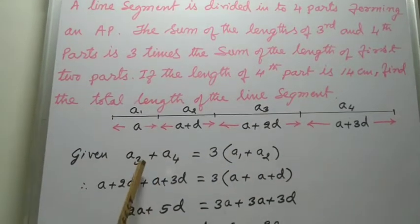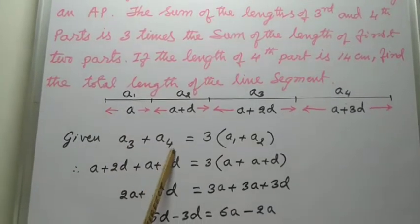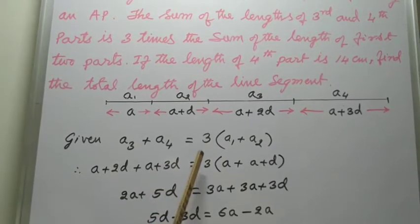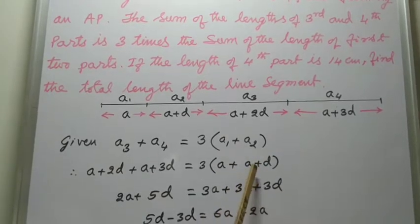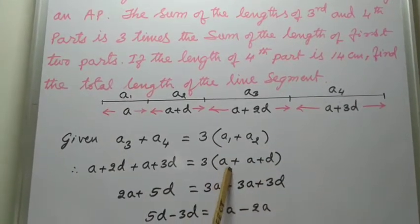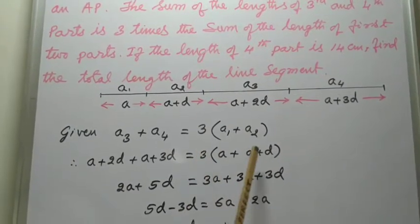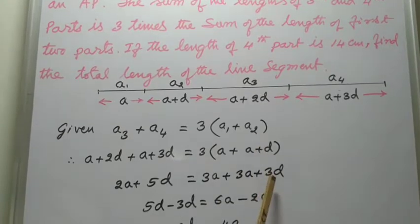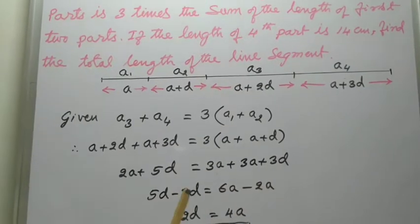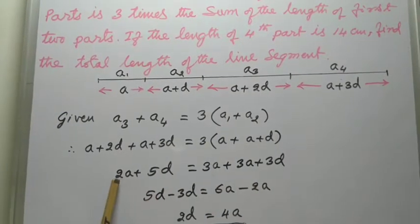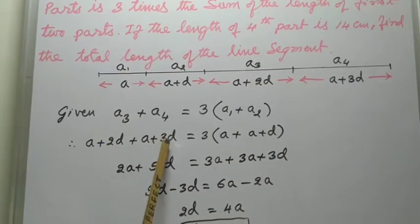Now, what is A3? In an AP, A3 means A plus 2D, and A4 means A plus 3D. This equals 3 into A1 plus A2, which is A plus (A plus D). Multiplying by 3 gives 3A plus 3D on the right. On the left side we have 2A plus 5D.